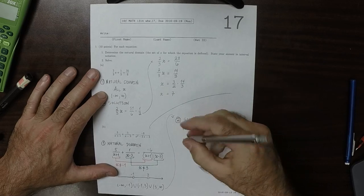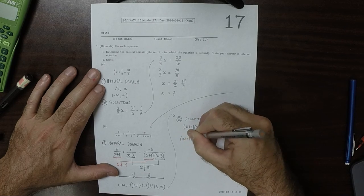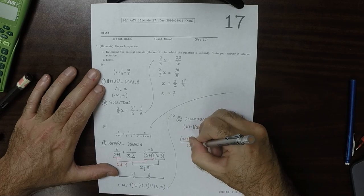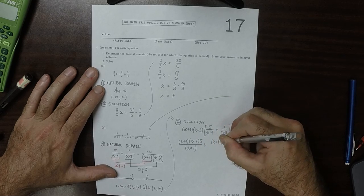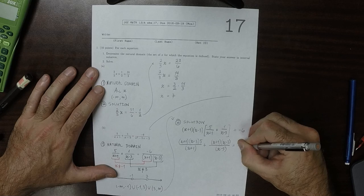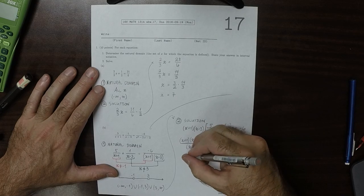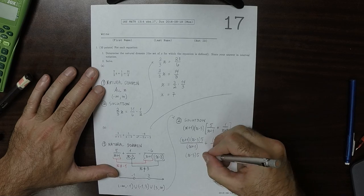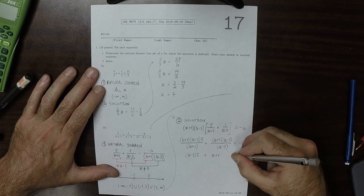And then when this distributes in, there is some cancellation. So that would be x plus 1 times x minus 3 times 5 over x plus 1 and then plus x plus 1 times x minus 3 and then over x minus 3 is negative 6. The x plus 1's cancel, the x minus 3's cancel, and we have x minus 3 times 5 plus x plus 1 is negative 6.